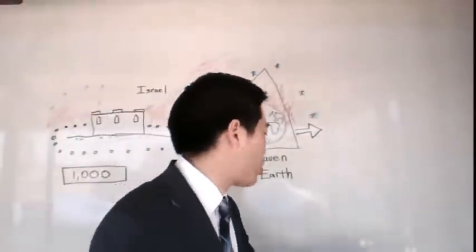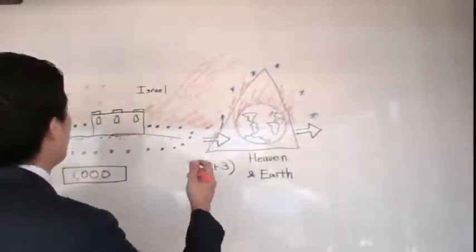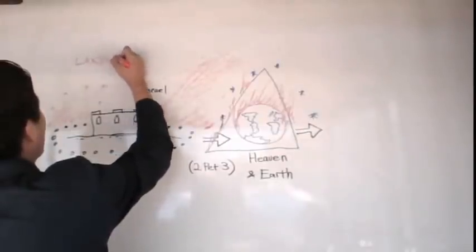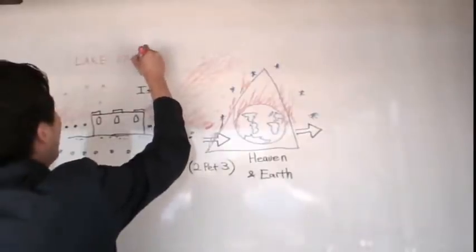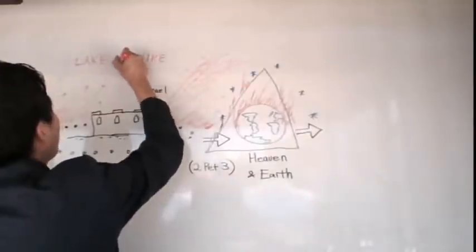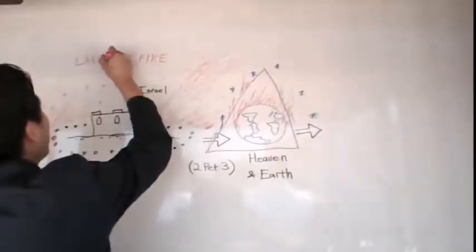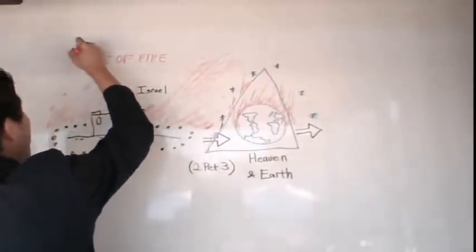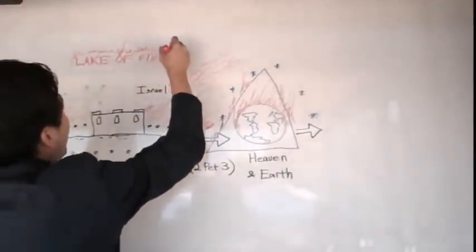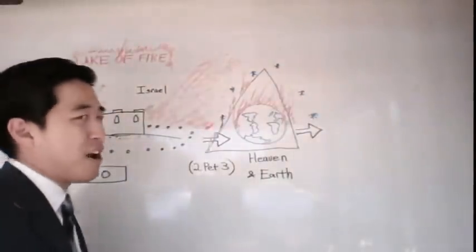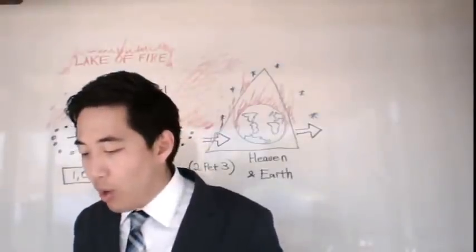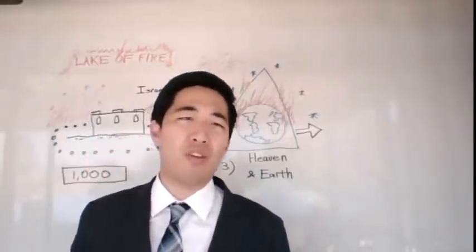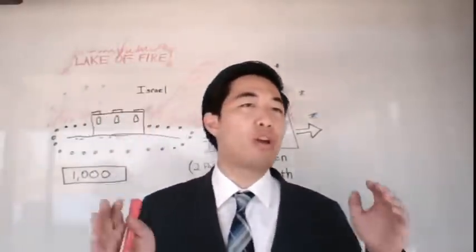Now the lake of fire, you're going to hear this heretical teaching that the lake of fire is considered to be a temporary place, referring to annihilation. Is the lake of fire eternal? Is it annihilation? It's eternal. Jehovah Witnesses and Seventh-day Adventists teach that the lake of fire is actually a place where you just go over there and you get annihilated. You don't burn forever. But that is completely false because look what the lake of fire is at the last part of verse 10.